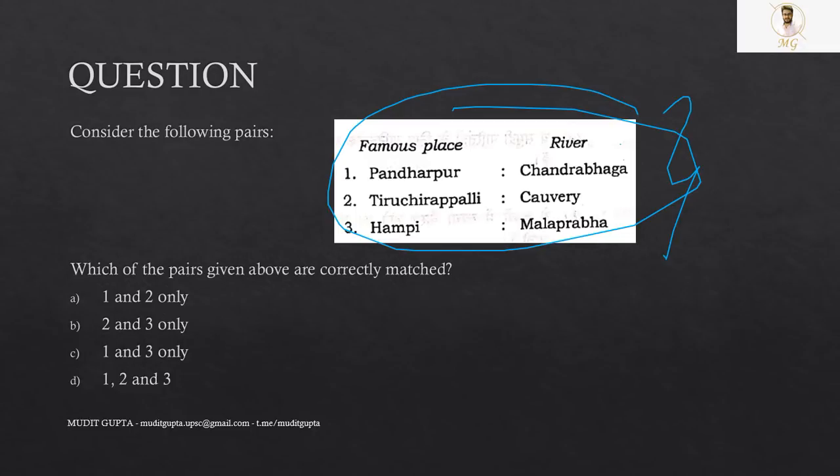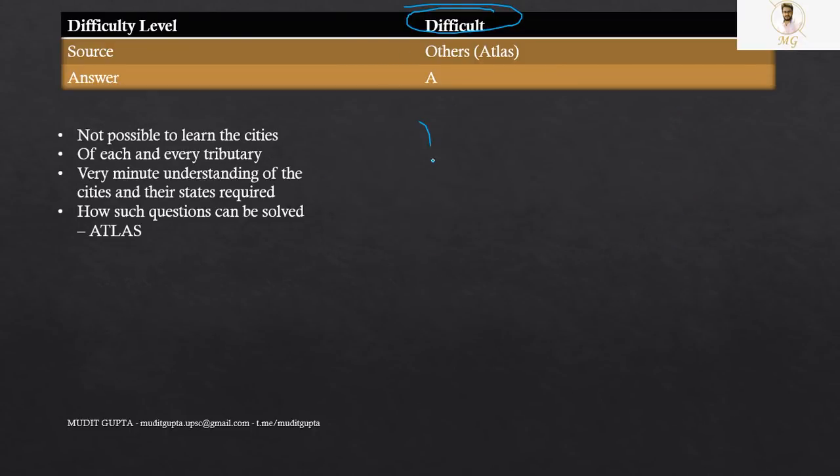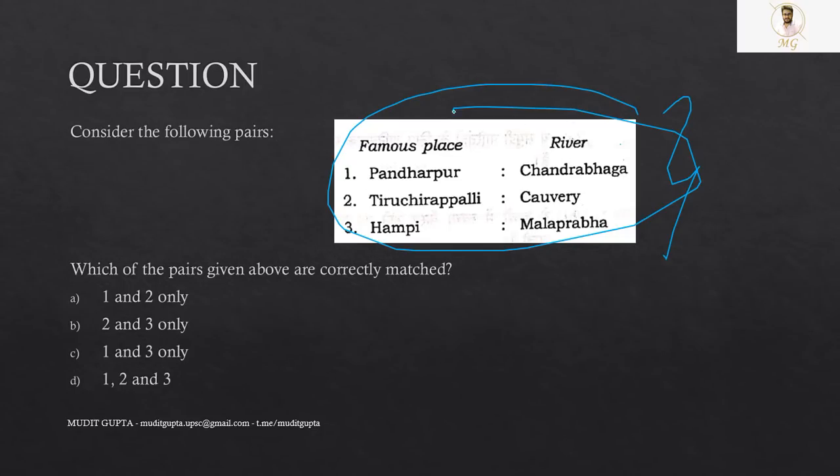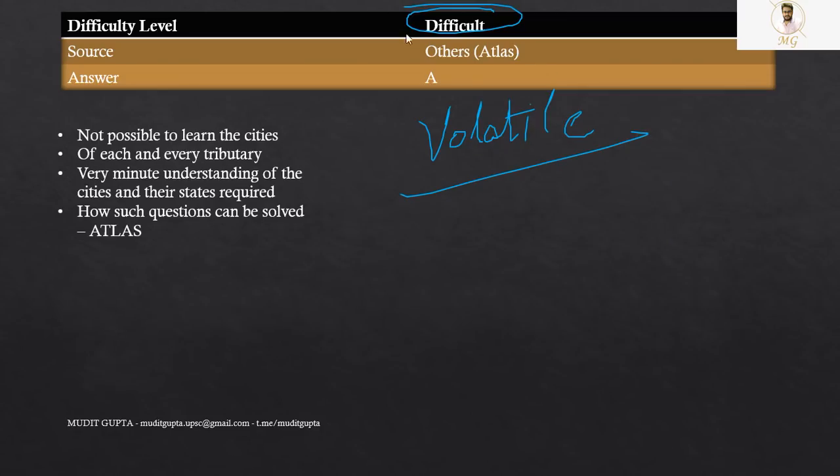As far as this question is concerned, it is a very difficult question. It was not given in NCERT or any other book, neither in Majid Hussain. I tried finding it in Majid Hussain as well, but it was not given. So again, it was a very volatile question. It was a very random question. These places that are not there in NCERTs or Majid Hussain or anywhere else. So again, it can be solved only if you have extreme knowledge of places and rivers, otherwise it cannot be solved easily.